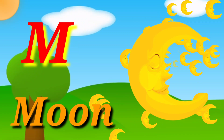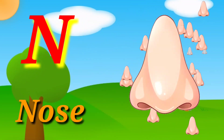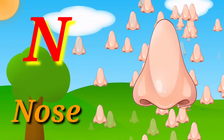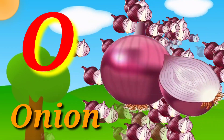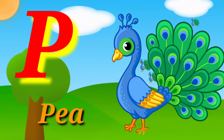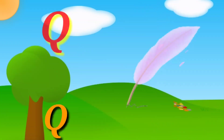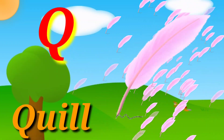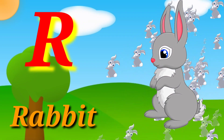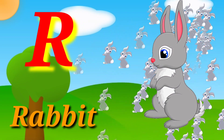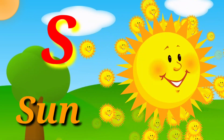M for moon, N for nose, O for onion, P for peacock, Q for quill, R for rabbit, S for sun.